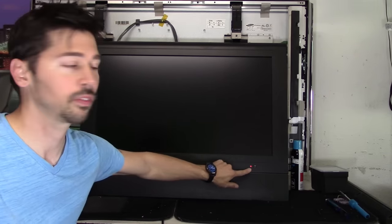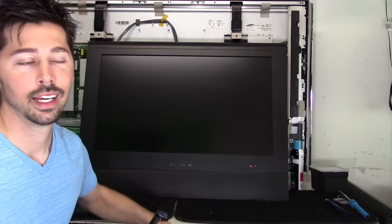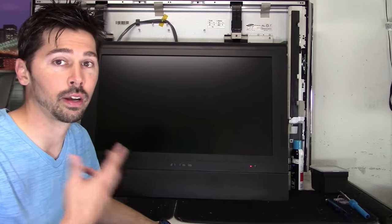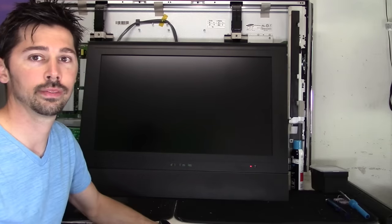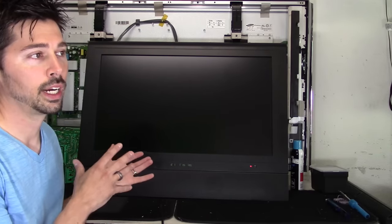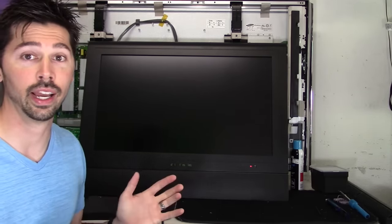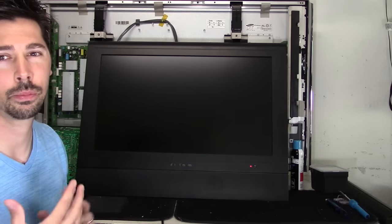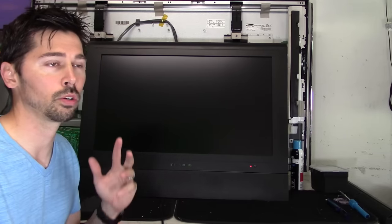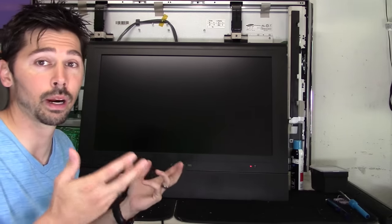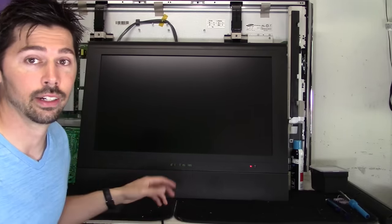Usually if it has a red light on the front panel like this does, it usually means that you do have 5 volt standby voltage. So the power supply should be okay. So I'm thinking it could be something on the main logic board, or maybe it could be still the power supply board. So let's go ahead and find out.